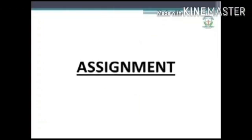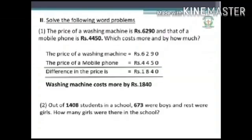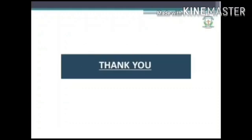Today's assignment: First, fill in the missing digits — the missing digits are 4, 2, and 9. Second, solve the following word problems — the answer to the first problem has been done for you. Third, estimate the difference by rounding each number to the nearest hundred, then compare it with the actual difference — one has been done for you. Children, hope you are completing in the maths notebook. Thank you.